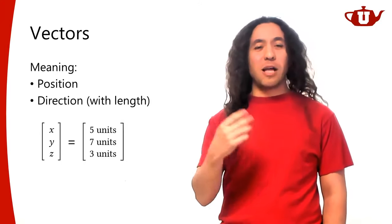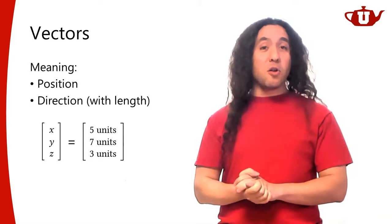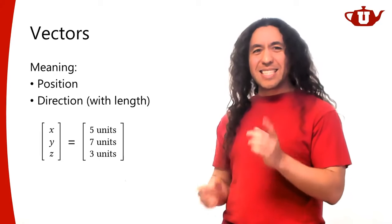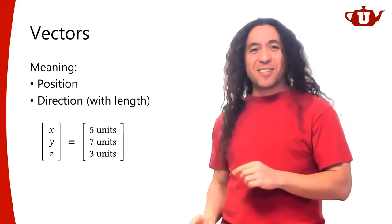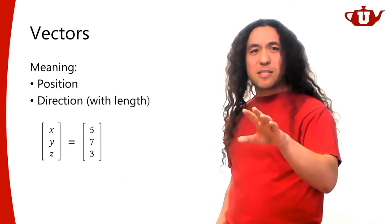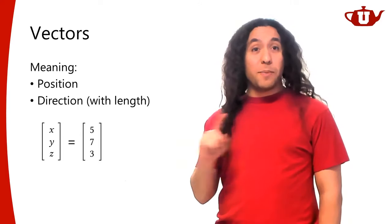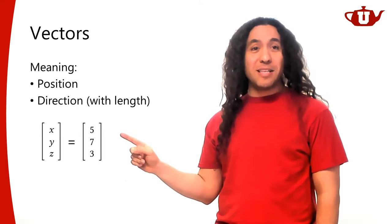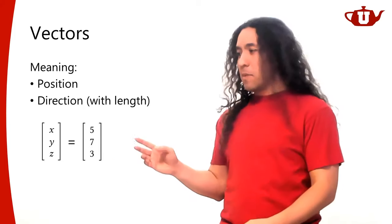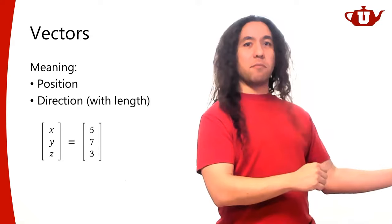This is very important and often missed: a vector on its own is entirely meaningless. It does not mean anything unless you provide a context. Only within a context — an origin position and x, y, z directions — does a vector have meaning. When I give you the vector 5, 7, 3, I walk five units along x, seven along y, and three along z from the origin.